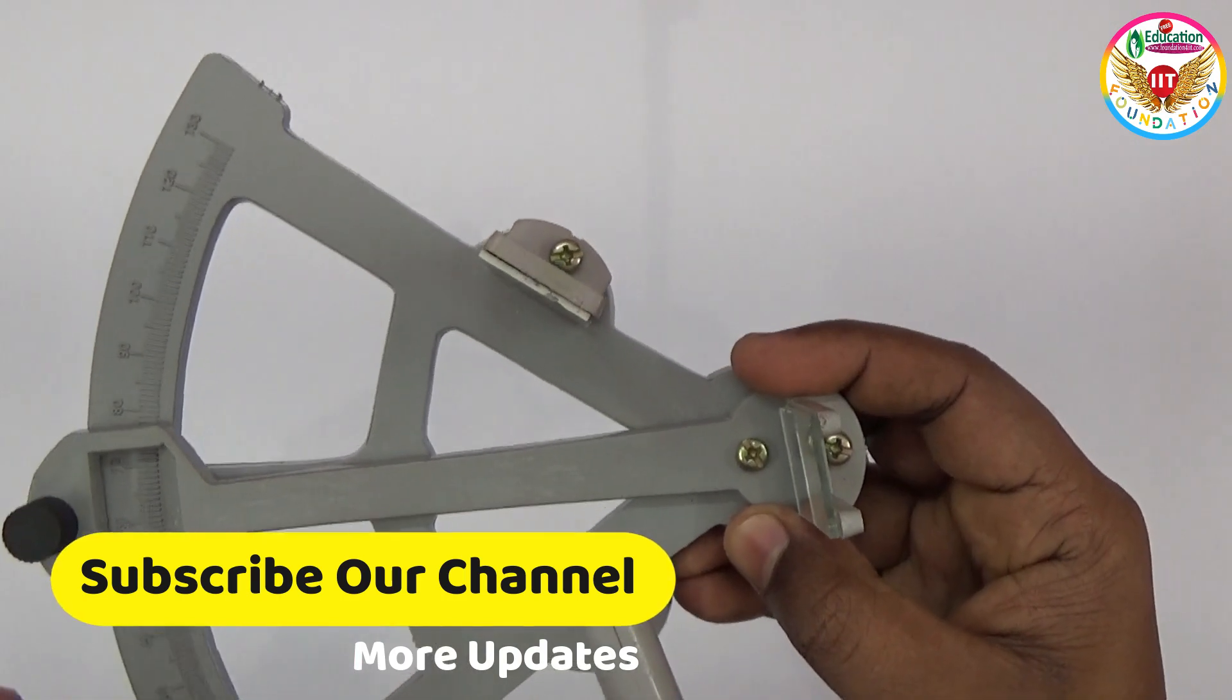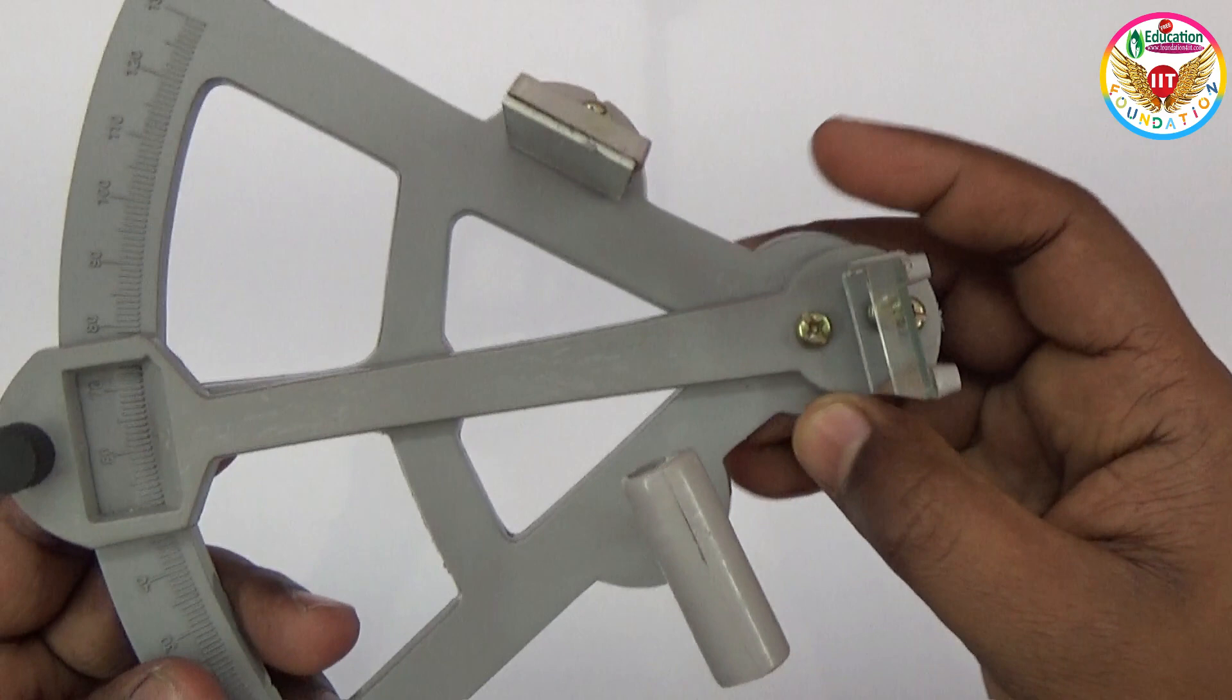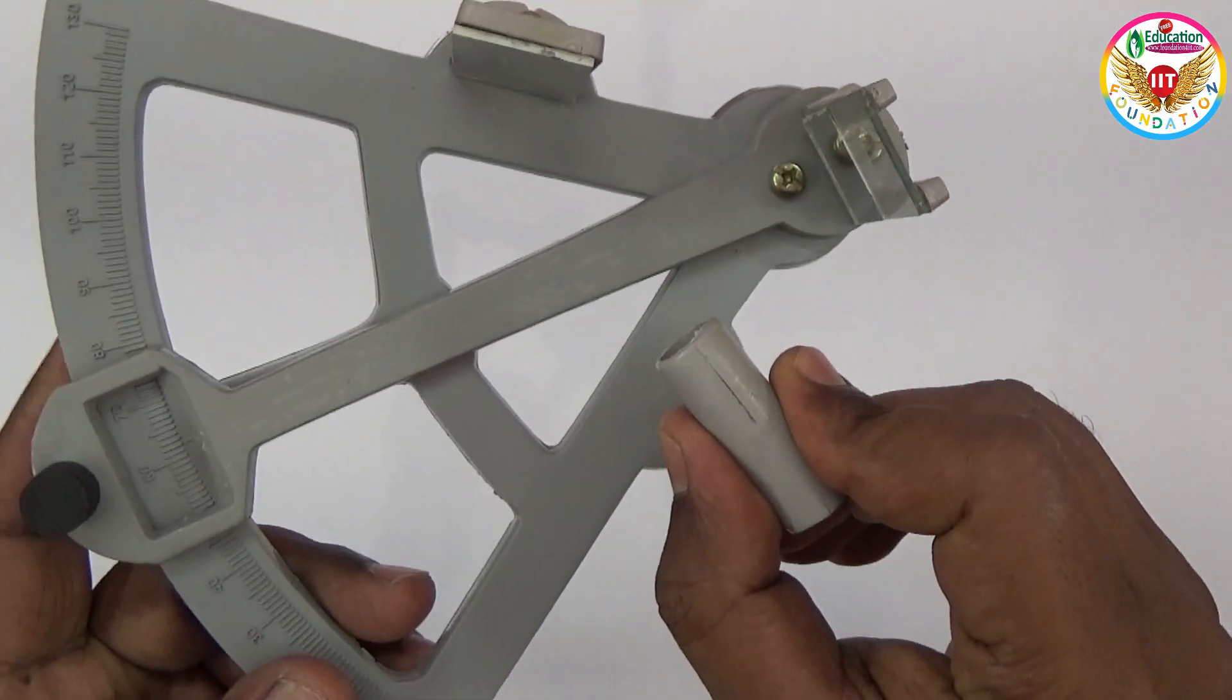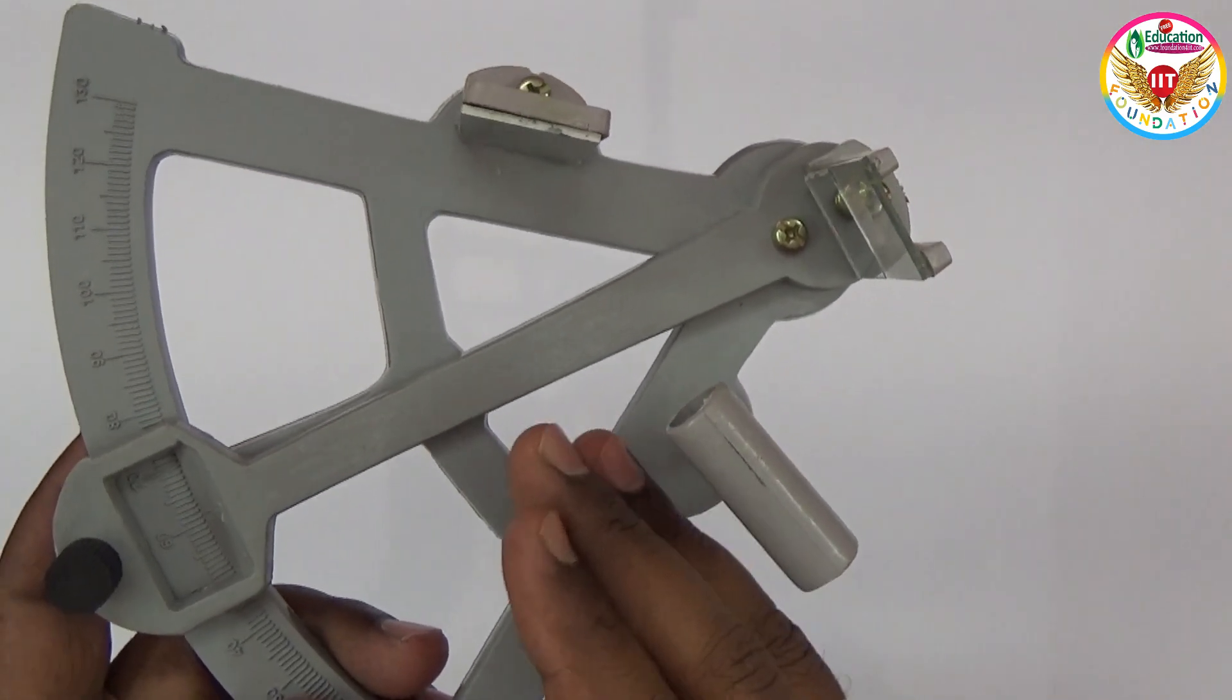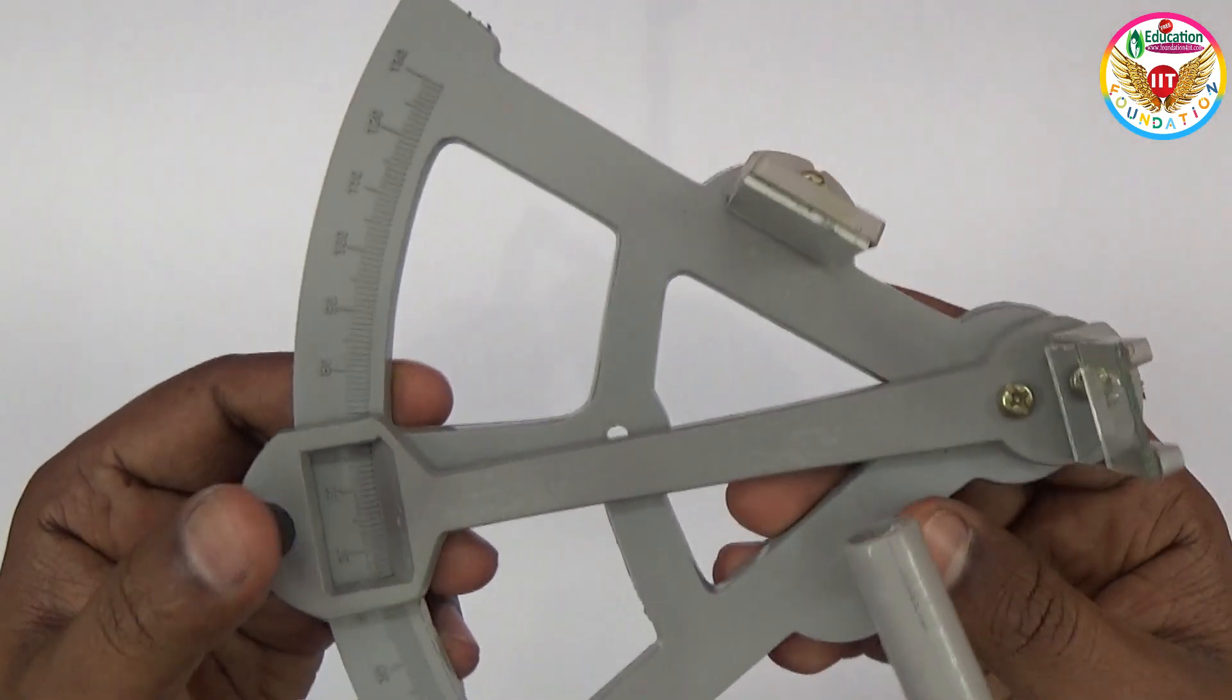The sextant is a navigation instrument that measures the angle between two different objects. The angle between the distance between two visible objects only we can use this. That's why when you come to this model...